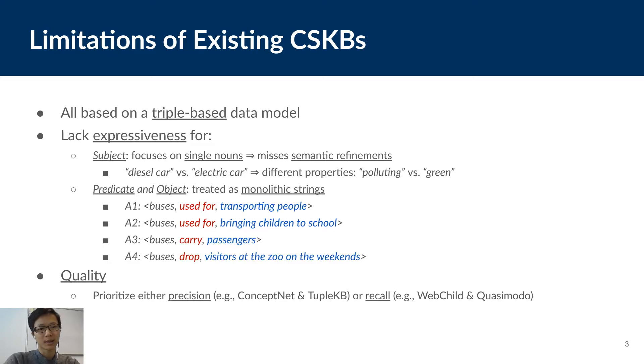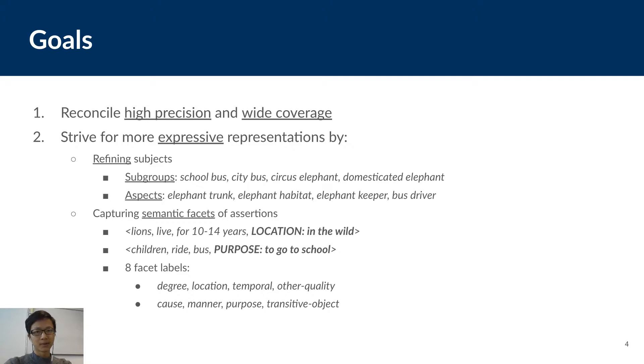Next, they treat predicates and objects as monolithic strings like in these four assertions A1, A2, A3, A4. This misses out the equivalence of A1 and A3 or the semantic relation that A2 refines A1. In addition, the spatial and temporal facets in A2 and A4 are mixed into unrelated strings. Finally, regarding quality, some of the major KBs prioritize either precision or recall but hardly reconcile both.